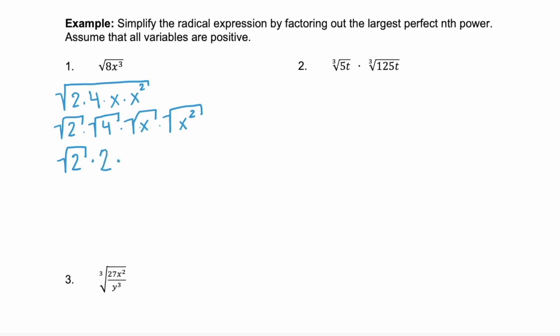We can't take the square root of 2 because it's not a perfect square, so that stays as the square root of 2. But the square root of 4 is 2. The square root of x — again, not a perfect square, so it stays. And the square root of x squared is just x.